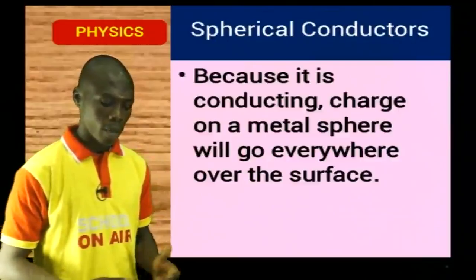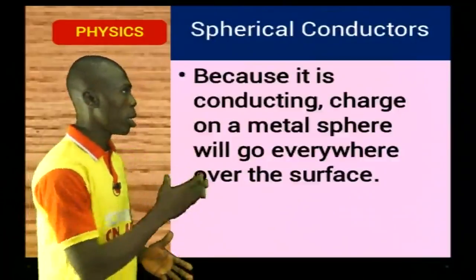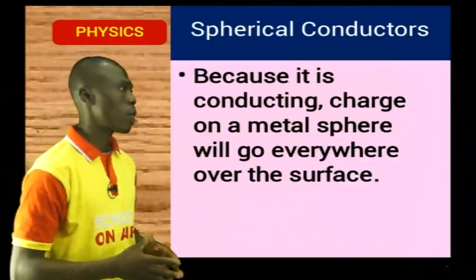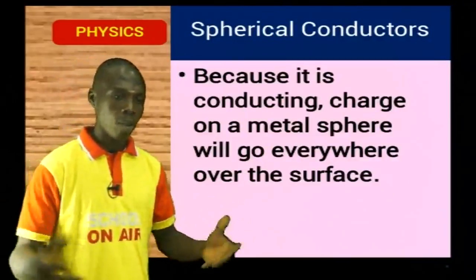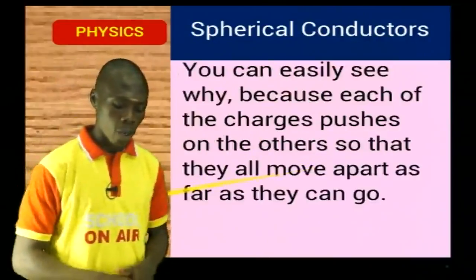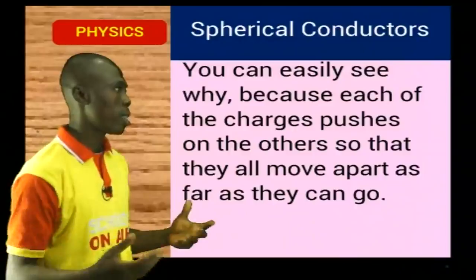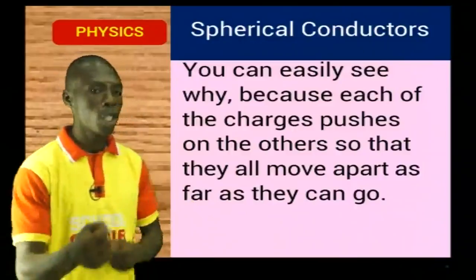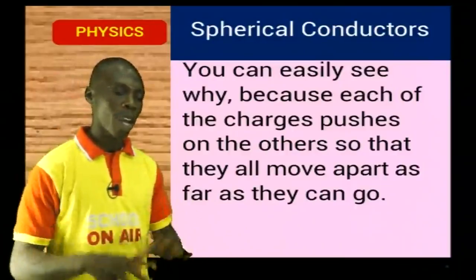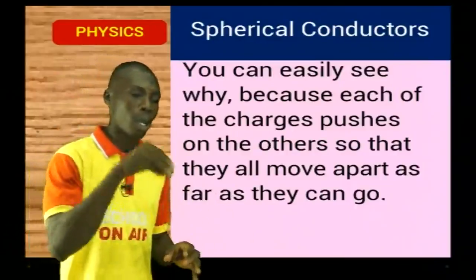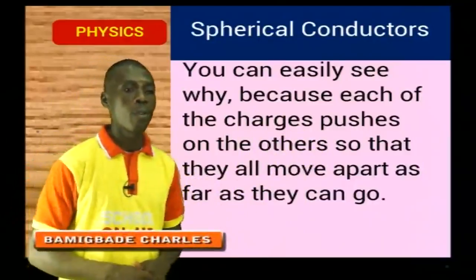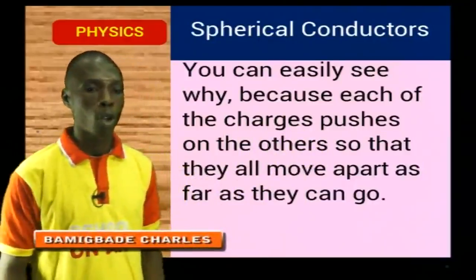Then we have spherical conductors to talk about briefly. Because it's conducting, a charge on a metal sphere will spread everywhere over the surface when you have a spherical conductor. When you have a charge on it, it goes everywhere over the surface of the spherical conductor. Each of the charges pushes on the others so that they all move apart as far as they can go, spreading the charge across every surface of the conductor.